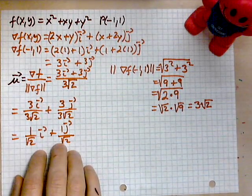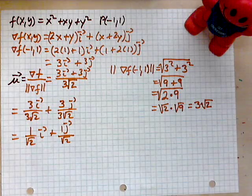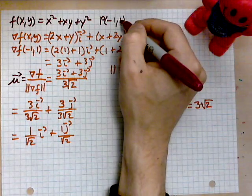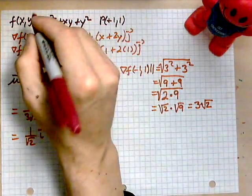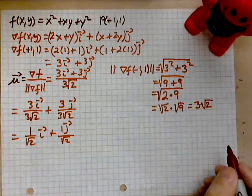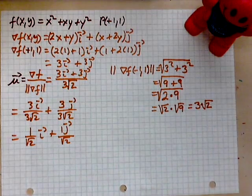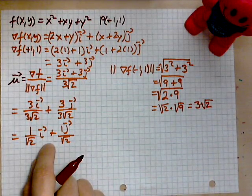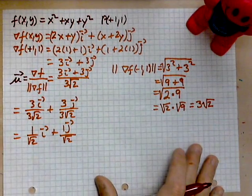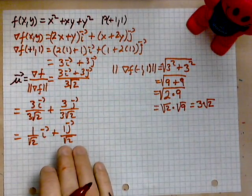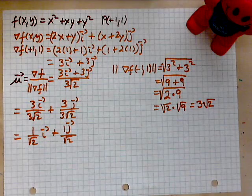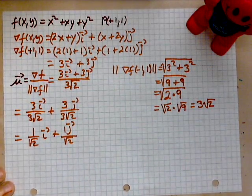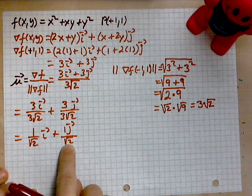Note: I made the mistake of using the point (1,1) instead of (−1,1), so just change everything accordingly — other than that it's all correct. This is the direction of most rapid increase. If you want the direction of most rapid decrease, you form the negative of this quantity.